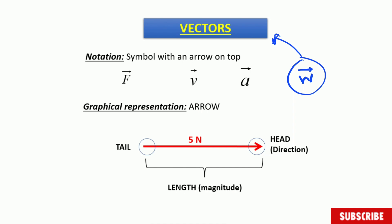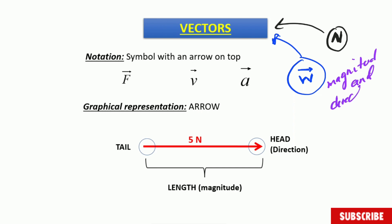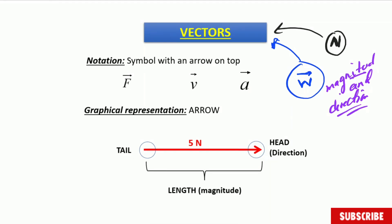If you study books from outside South Africa, they may not use the arrow on top, but instead use bold notation to represent a vector quantity. However, here in South Africa we use the symbol of the specific physical quantity with the arrow on top. Be careful: if you see a physical quantity like W without the arrow on top, then we are referring only to the magnitude of that physical quantity.